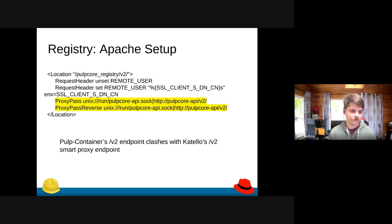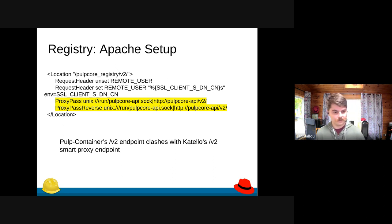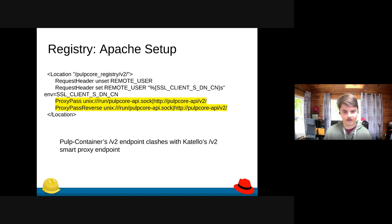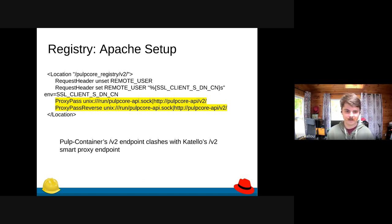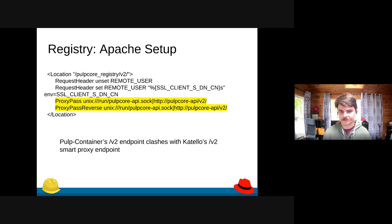We use Apache web server to host the registry. One interesting thing is that the Pulp core registry v2 endpoint clashes with our smart proxies' v2 endpoint, so we have to do a redirect — we redirect it to a Pulp core registry v2 endpoint. So if you're ever trying to debug a Katello Pulp core registry, you won't find it at simply the v2 endpoint; you'll have to look at the Pulp core registry path. The same applies on smart proxies.